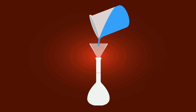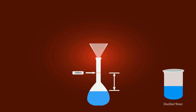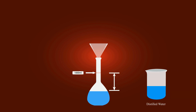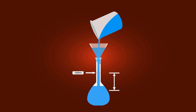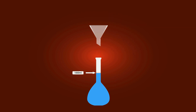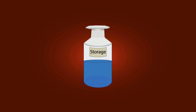Now you can see there is a red mark — the red mark indicates the 1000 ml level. Now add distilled water up to the 1000 ml point so you can get 1000 ml of one molar solution of sodium chloride. You have now prepared one molar solution of sodium chloride.